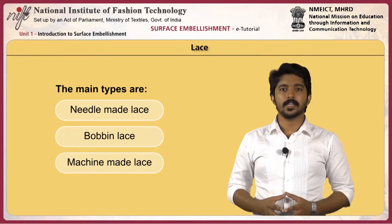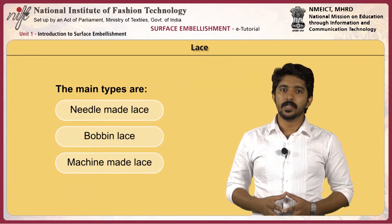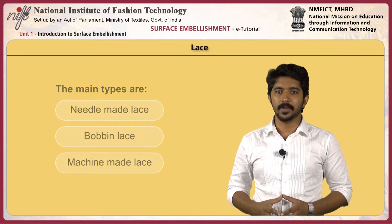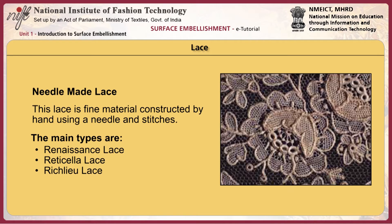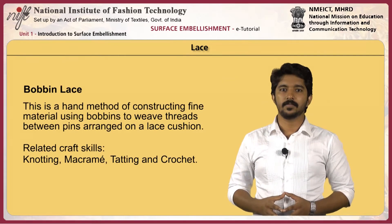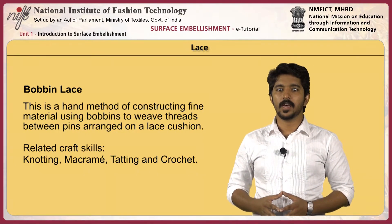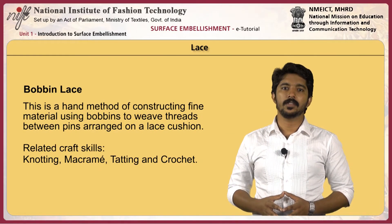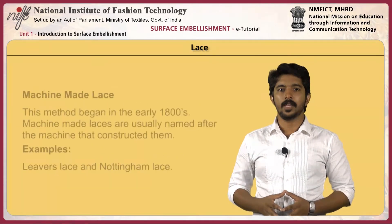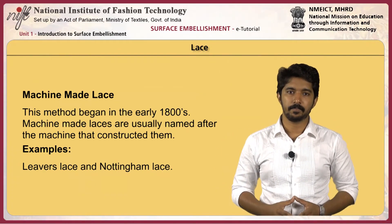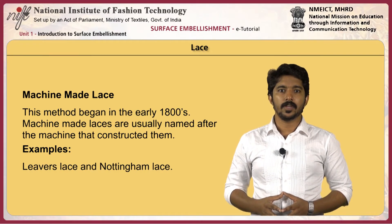Lace is an integrated material made by various methods by hand or machine, using interweaving, knotting, or looping processes. The main types are needle made lace, bobbin lace, and machine made lace. Needle made lace is a fine material constructed by hand using a needle and stitches; main types are renaissance lace, reticella lace, and regula lace. Bobbin lace is a hand method of constructing fine material using bobbins to weave threads between pins arranged on a lace cushion; related craft skills are knotting, macramé, tatting, and crochet. Machine made lace began in the early 18th century and is usually named after the machine that constructed it, such as Levers lace and Nottingham lace.